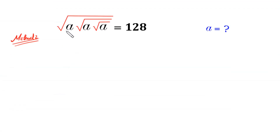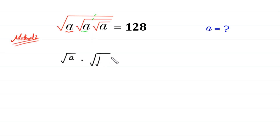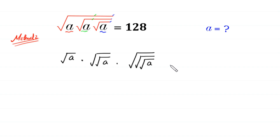In method 2, we notice that this a is under one square root, so we write it as square root of a. We notice this a is under two square roots, so we write it as square root of square root of a. And we notice this a is under three square roots — one, two, and three — so we write it as square root of square root of square root of a, all equal to 128.